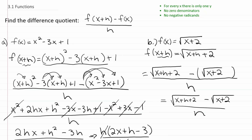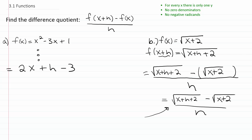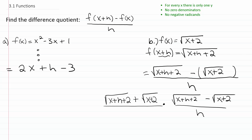Looking at the fraction that results, you might wonder what you can do to simplify it. But there's actually a hint in the fact that the numerator has two radicals in it. Just like when we see radicals in a denominator and want to rationalize it, when we see radicals in the numerator, we want to think about rationalizing the numerator. So let's perform the rationalization: I'm going to multiply the top of the fraction by the same expression but with the sign in the middle changed — so instead of minus, I'll use plus. So I multiply by the square root of x plus h plus two plus the square root of x plus two.